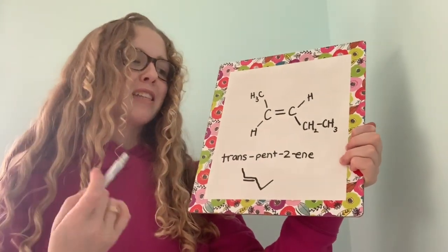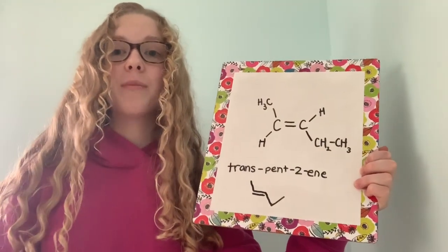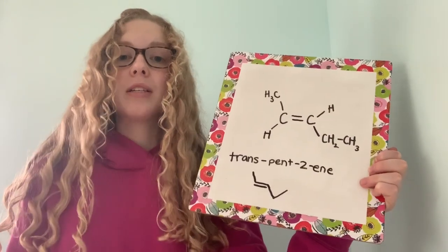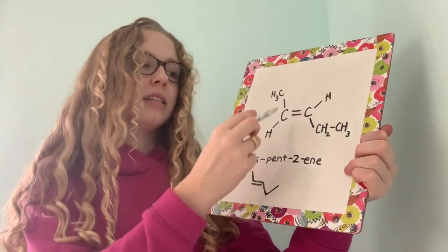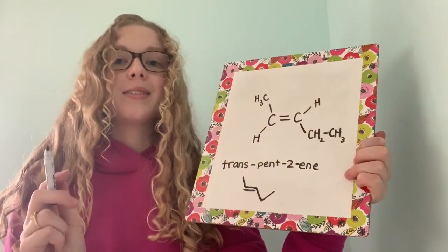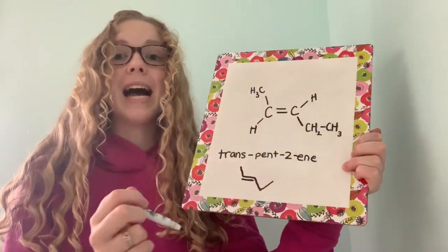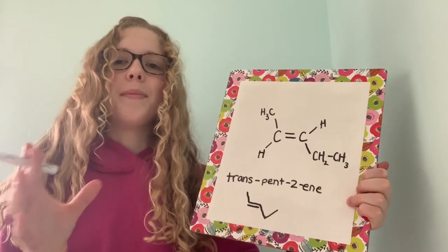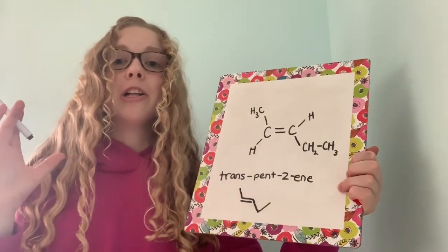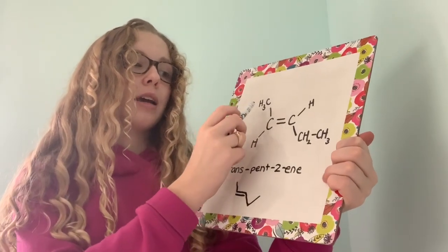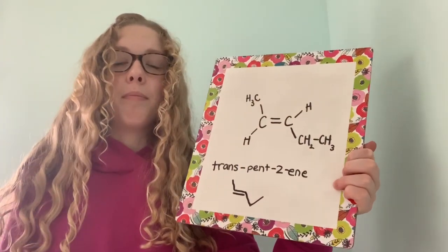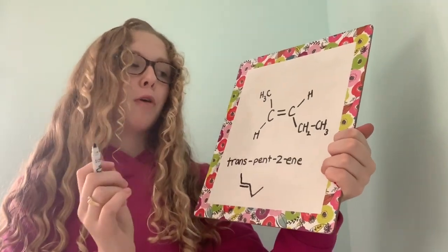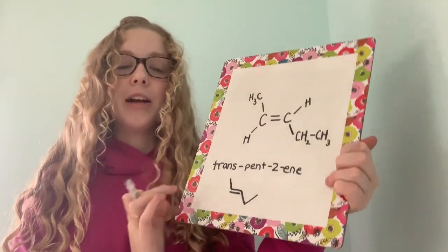Let's try an example. As always, we start by finding the longest carbon chain — 1, 2, 3, 4, 5 — the longest carbon chain, and there are no substituents, so it's just pent. The double bond starts at carbon 2, so it's pent-2-ene because there's a double bond, making it an alkene. The big molecules that are important — you can often tell by which molecule has the largest atomic mass. So methane and ethyl obviously trump the hydrogen because they have much more mass. They are on opposite sides of the double bond, so we're going to include trans.